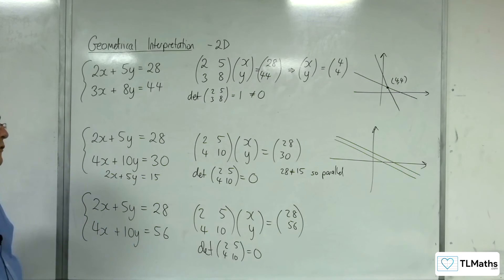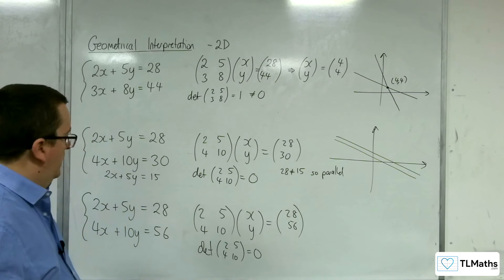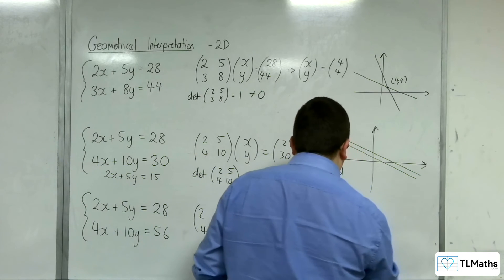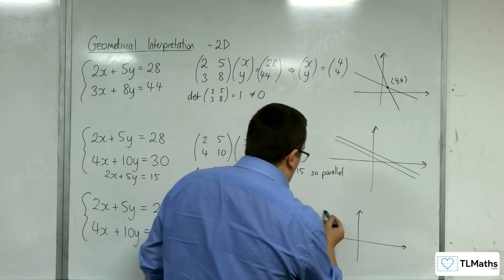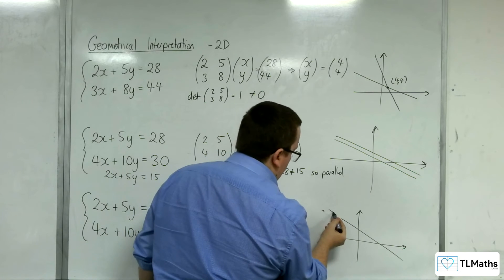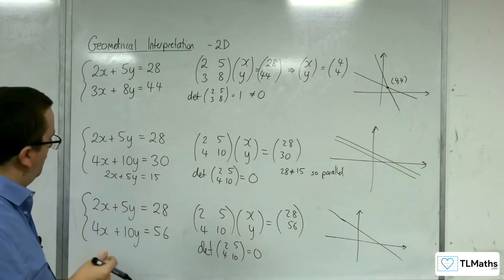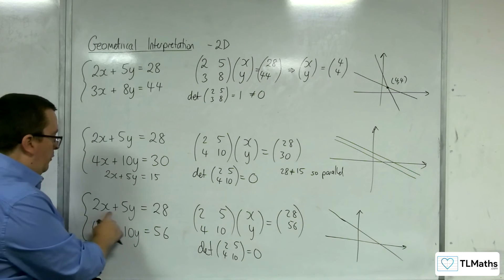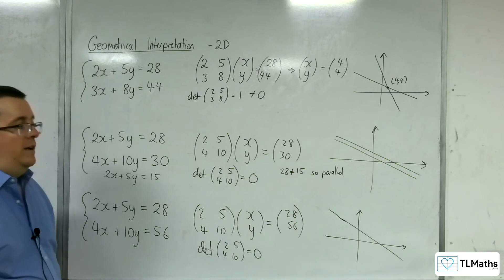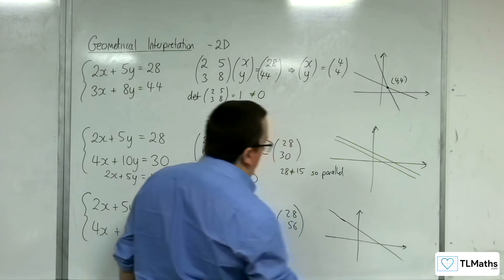So 28 not equal to 15, so they are parallel. Okay. And so, because they're parallel, there is no solution. Whereas in this situation, we've got the 2x plus 5y equals 28. Okay. That wasn't very good, was it? I don't know if that was any better. So we've got the 2x plus 5y equals 28. But if I was to multiply this equation by 2,